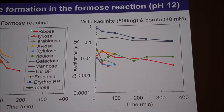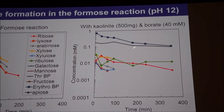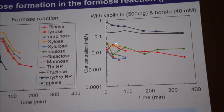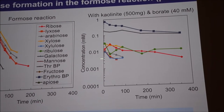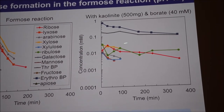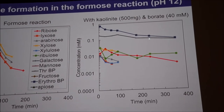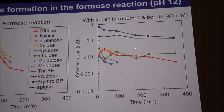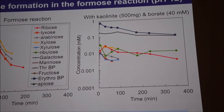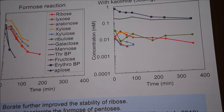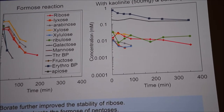The left panel is the same as before. In the right panel, we add borate to the kaolinite solution. We can see ribose is much more stabilized with combined kaolinite and borate compared to kaolinite alone. However, there are two major branch pentoses present. The formation of branch pentoses is promoted by the additional borate — this is consistent with what was reported by Kimata et al. in 2010. But ribose itself is much more stabilized than with kaolinite alone.